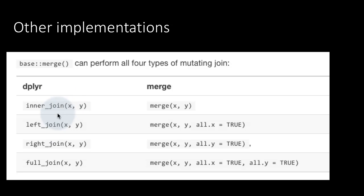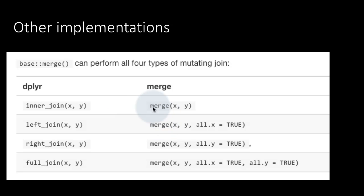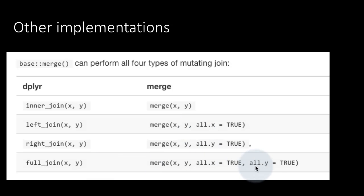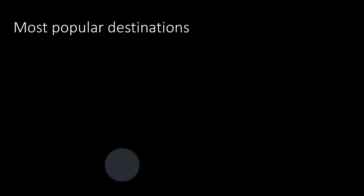Now that we've covered joins in dplyr — inner join, left join, right join, and full join — it's worth noting that traditional R without dplyr also had functions for all these operations. The main function was merge(). With merge(x, y) you get an inner join; merge(x, y, all.x = TRUE) is a left join; merge(x, y, all.y = TRUE) is a right join; and merge(x, y, all.x = TRUE, all.y = TRUE) gives a full join. The dplyr syntax is cleaner and also tends to be more efficient and faster.